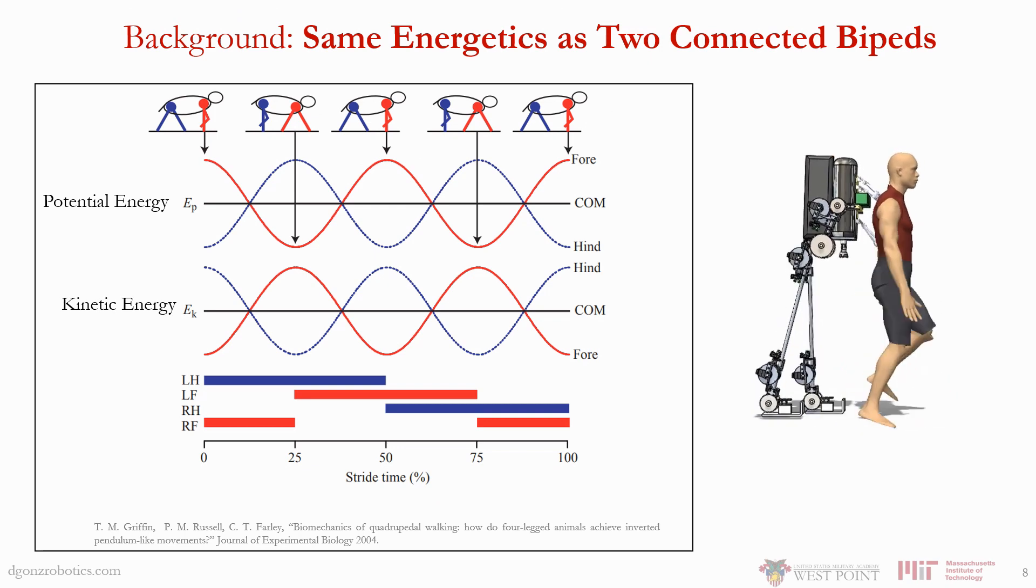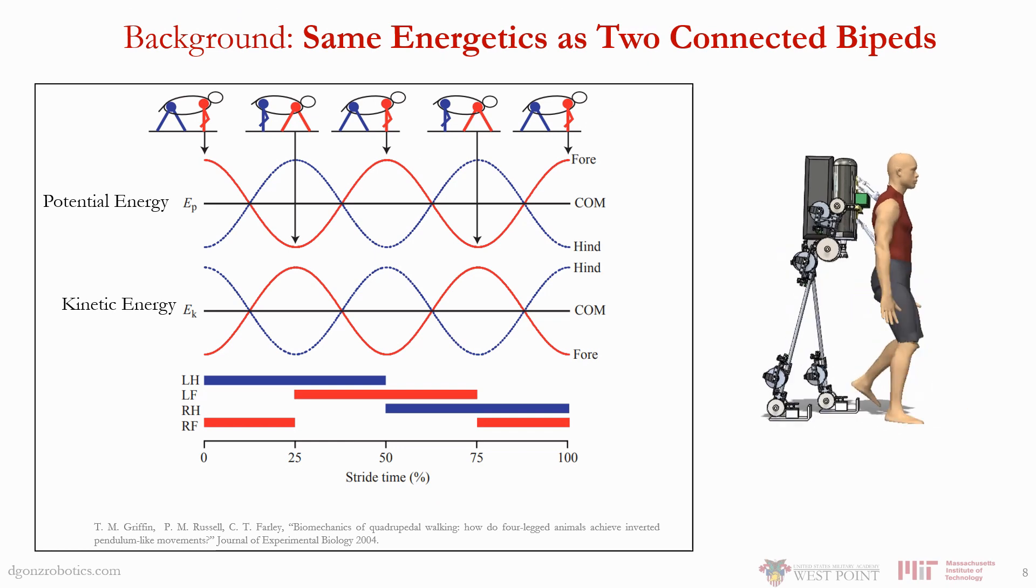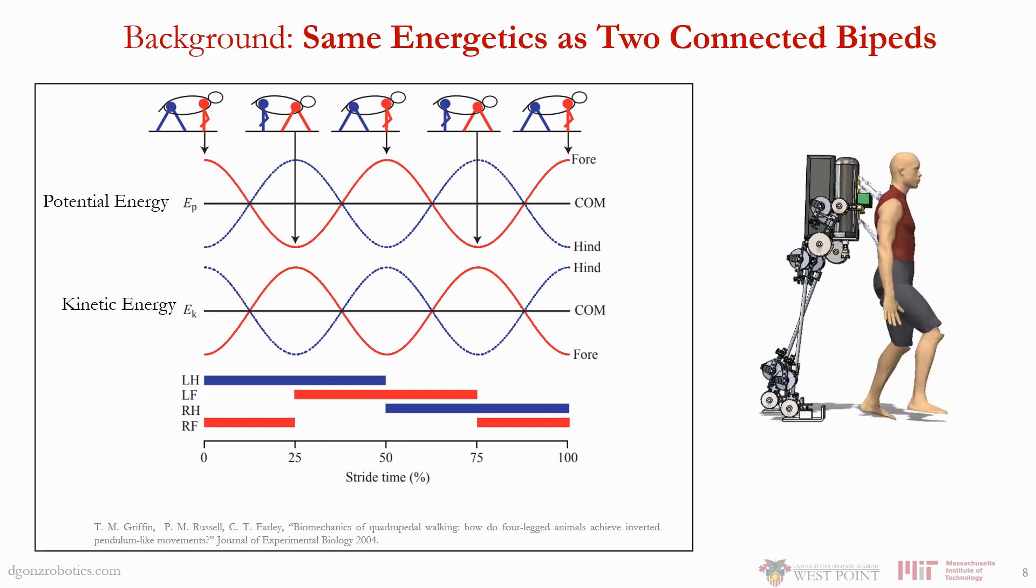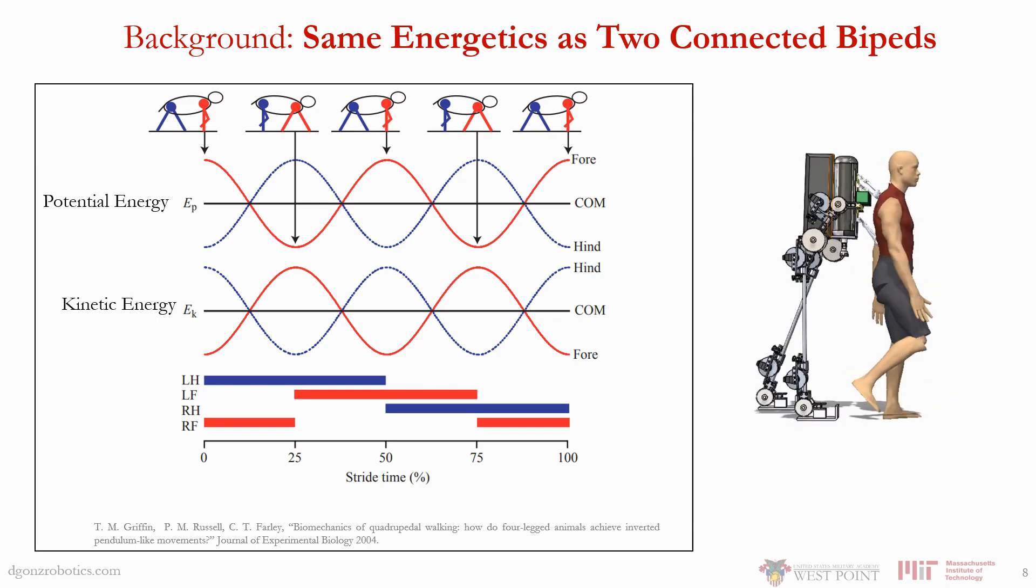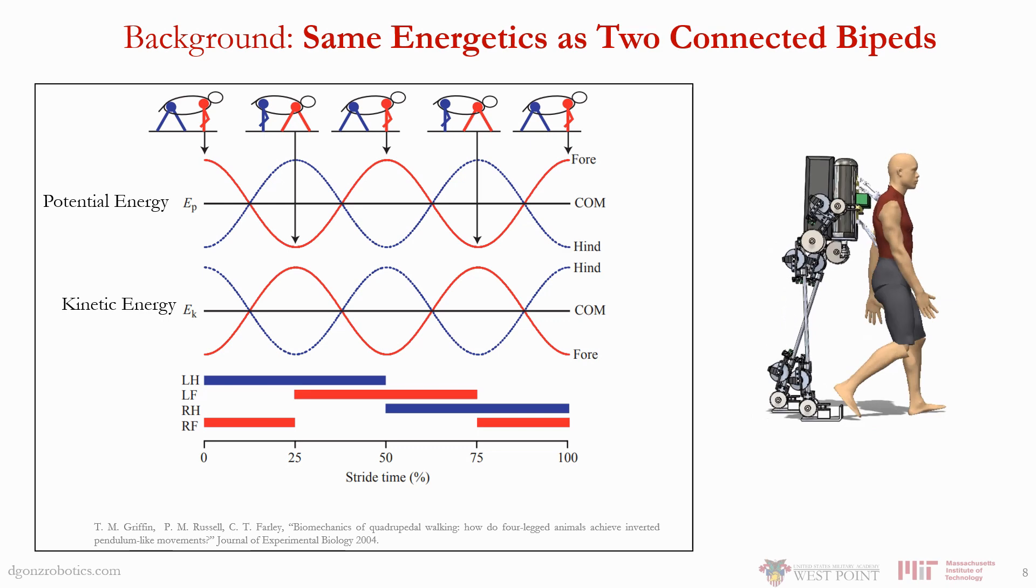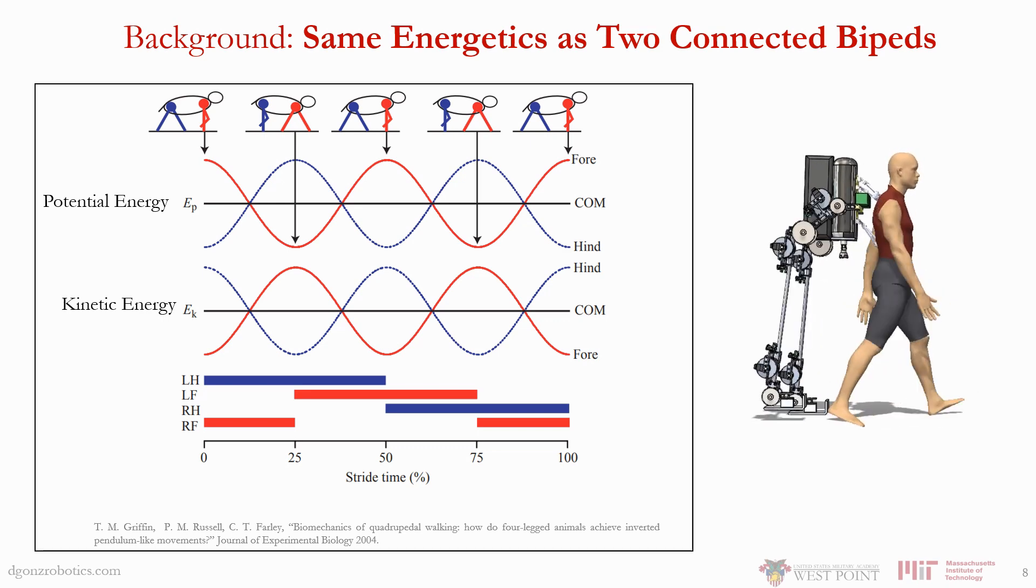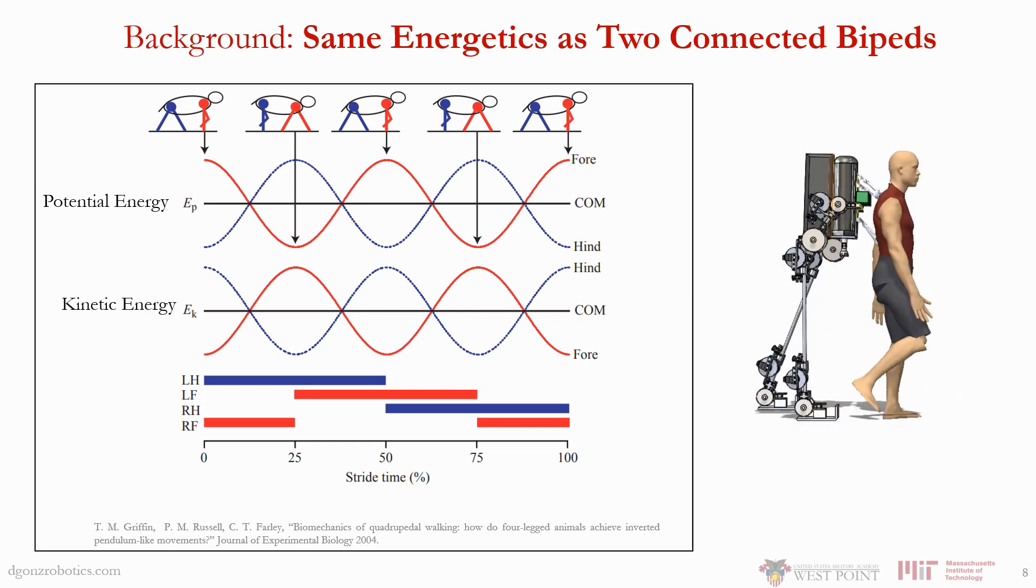What is perhaps most intriguing about this gait cycle is that the front and rear halves of a quadruped exhibit the same energetics as two bipeds walking 25% out of phase. If the human XRL system can be designed to passively synchronize to this special gait cycle, we can supplement this already natural stability with feedback control to achieve additional robustness.